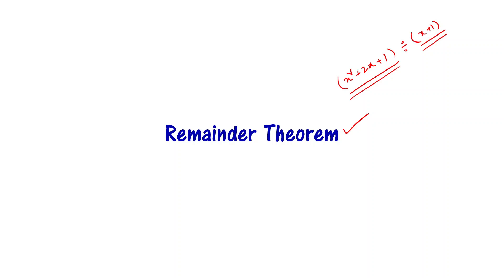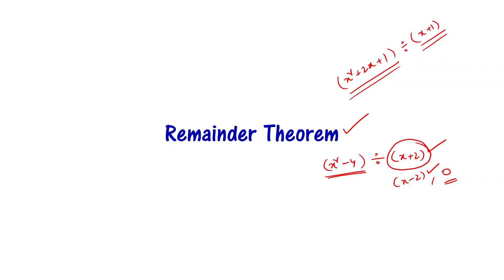There is another benefit. For example, I have a polynomial x squared minus 4 and I am going to divide it by x plus 2. When I divide, I get x minus 2 as the quotient and 0 as the remainder. If the remainder is 0, it means that x plus 2 and x minus 2 are factors of x squared minus 4. We can use the Remainder Theorem to find the remainder, and if it is 0, we can say that the divisor is a factor of the given polynomial.